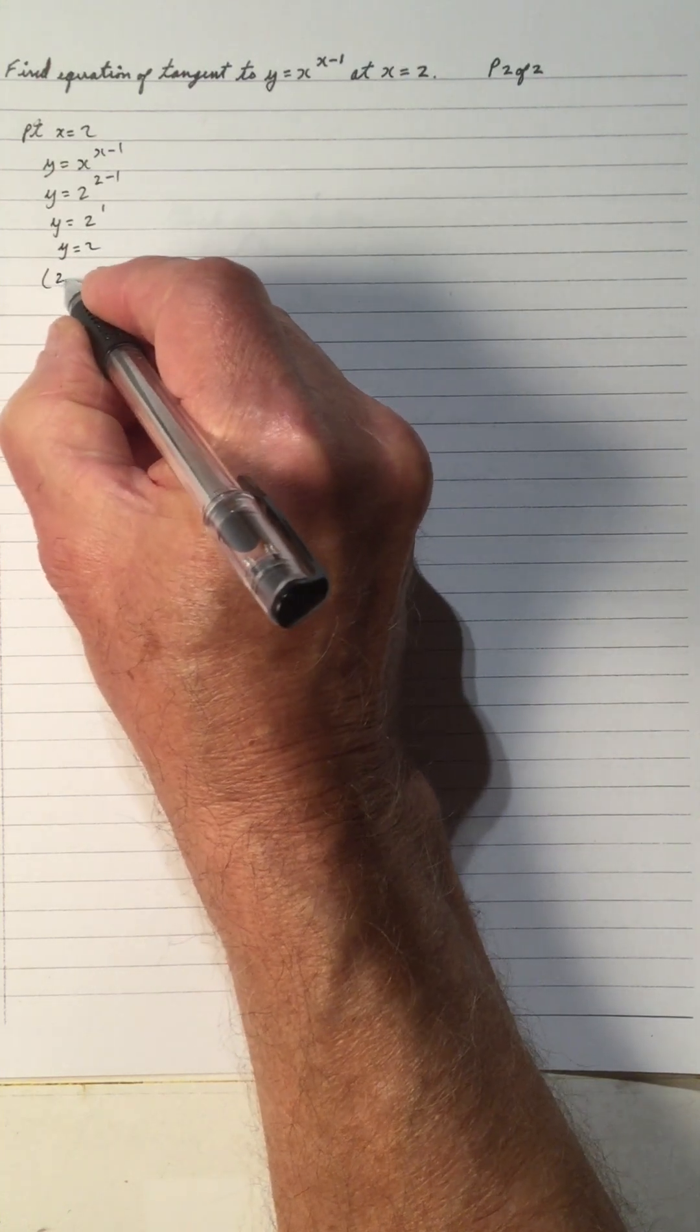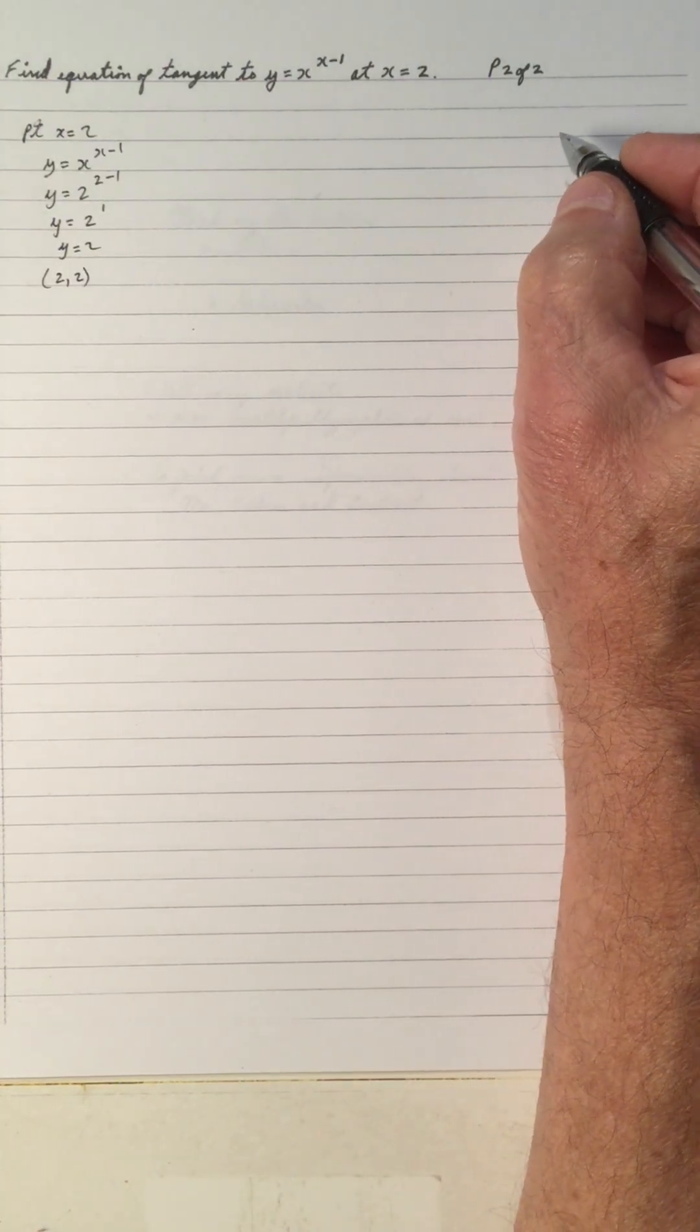So the point is x is 2, y is 2. That's the point that the tangent will be at.